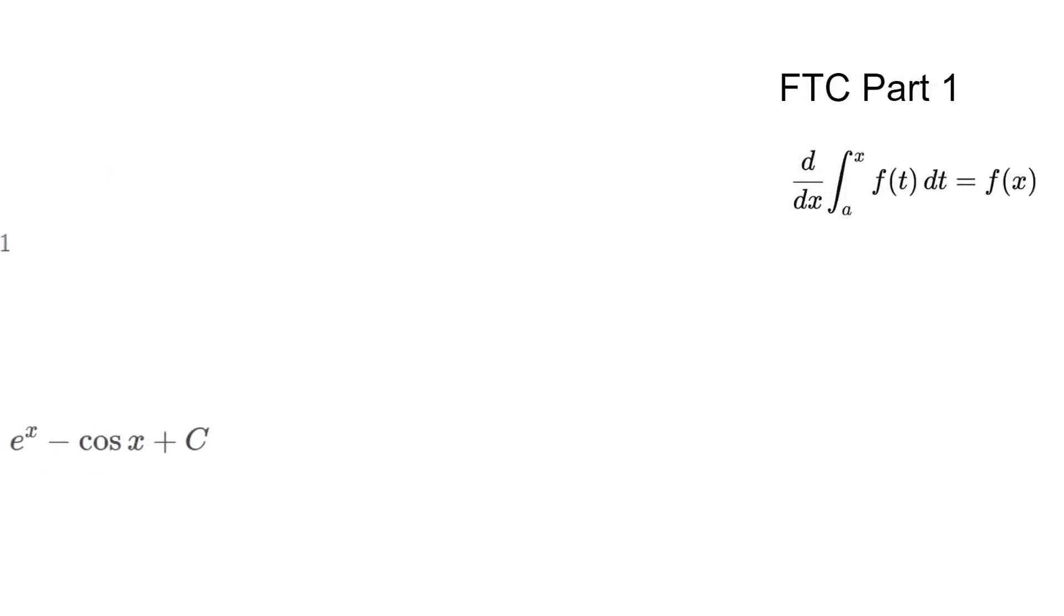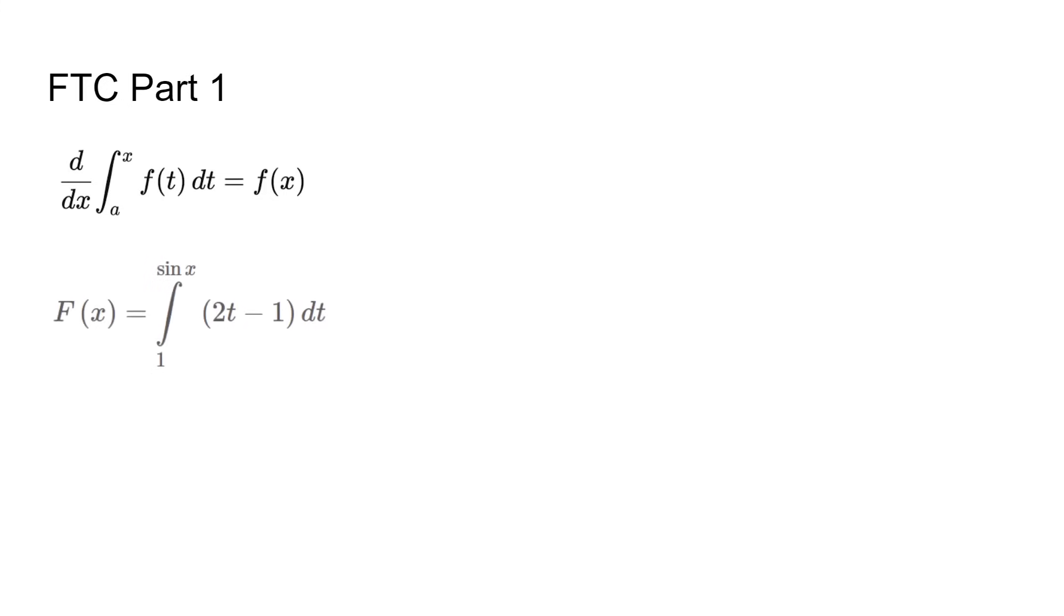The next topic is the fundamental theorem of calculus, which has two parts. Part 1 simply states that the derivative of an integral of f of x is just f of x, because they cancel out. Take note that the x is dropped into f of t to make the result f of x. We can apply this to a problem like this. We get 2 sin x minus 1, but because it is sin x instead of just x, we use a chain rule and multiply it by cos x as well.